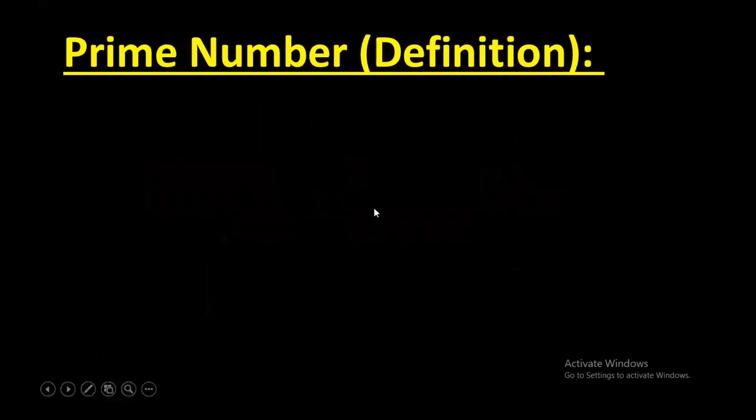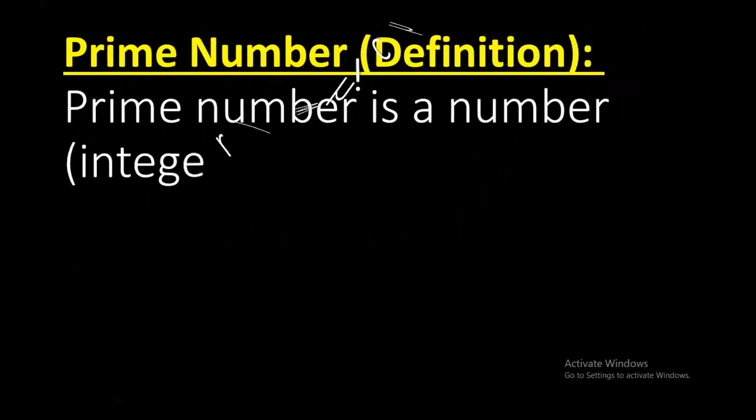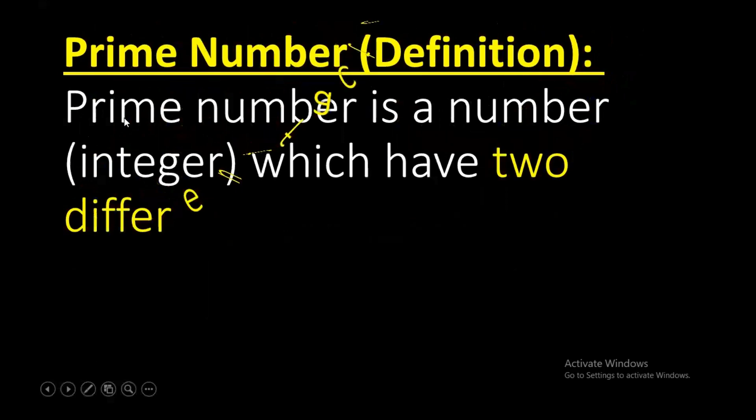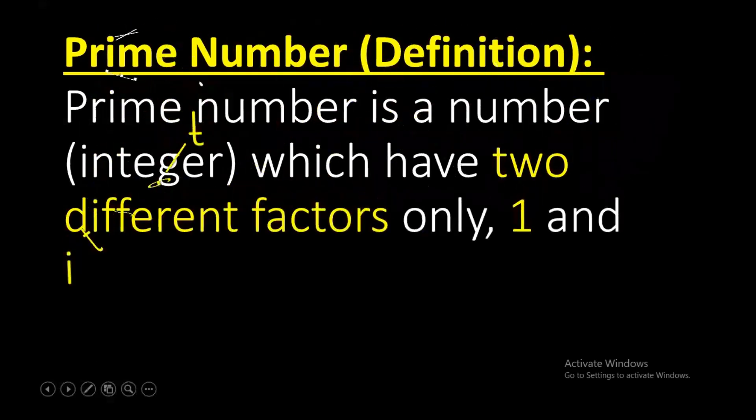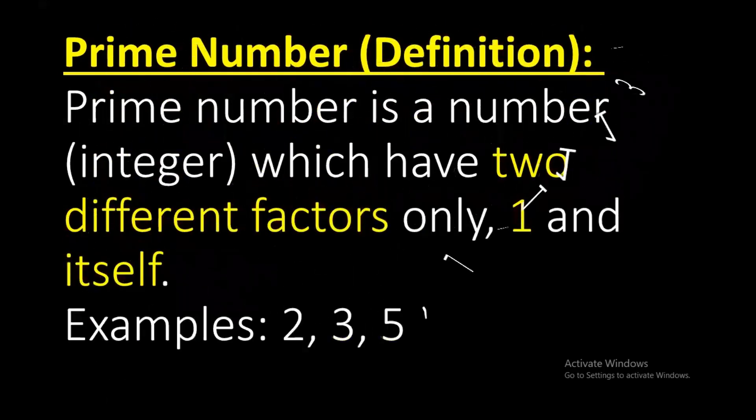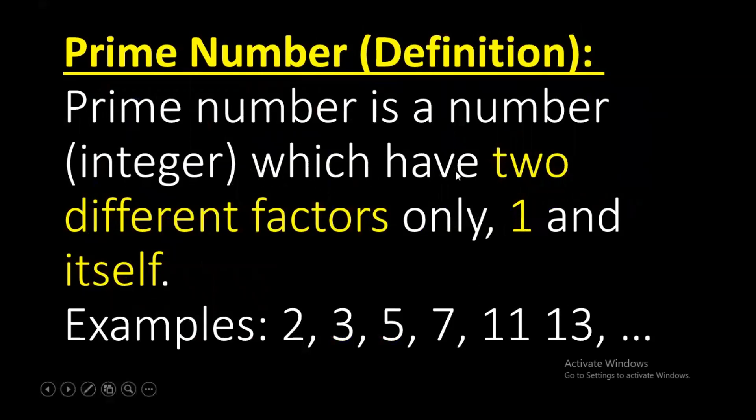And you should know the definition of prime number. The definition of prime number is a prime number is a number or integer which has two different factors, only one and itself. Examples are 2, 3, 5, 7, 11, and 13.